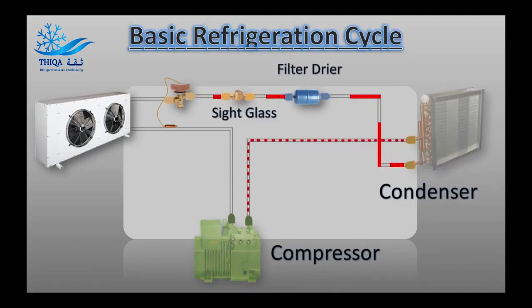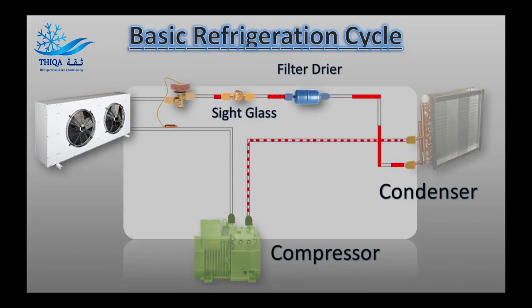After condensing, the refrigerant is a high-pressure, low-temperature liquid, at which point it's routed to the loop's filter dryer device, then to the sight glass.